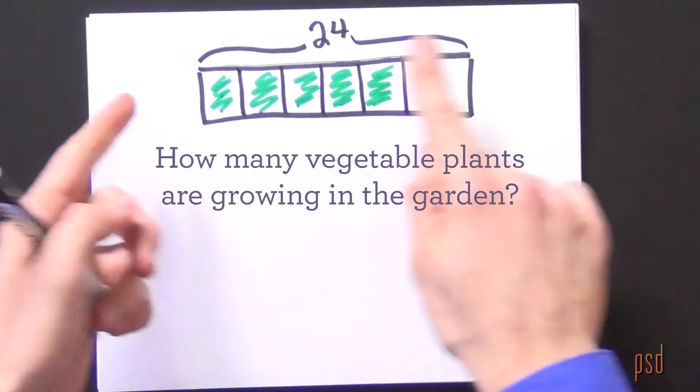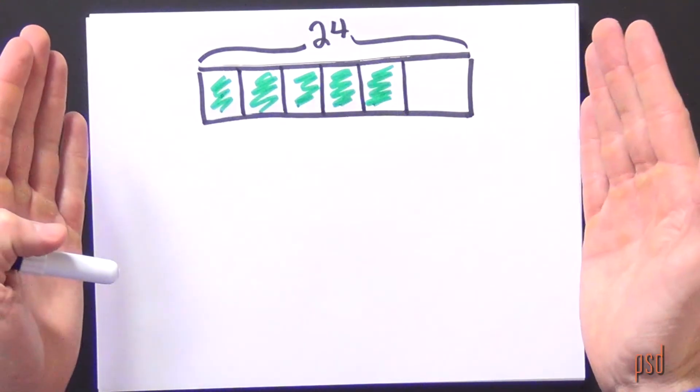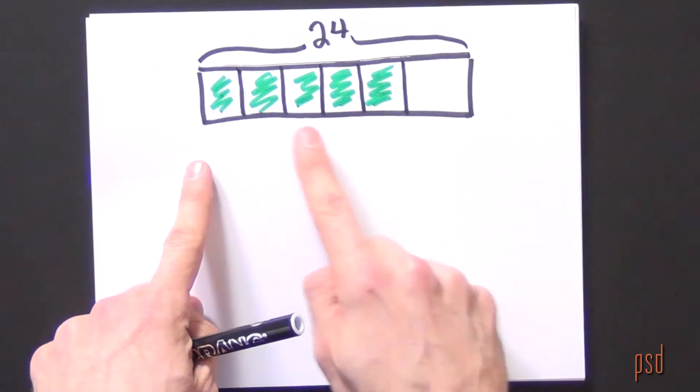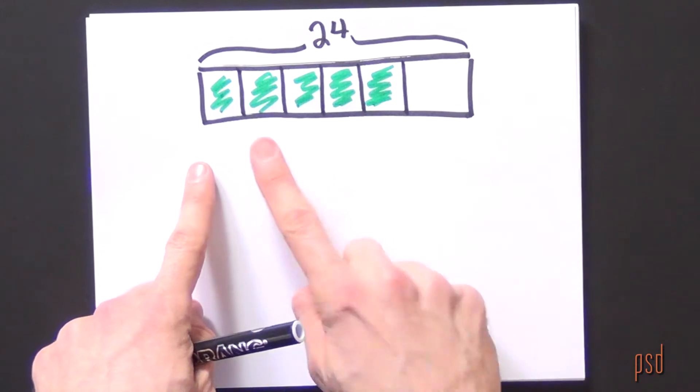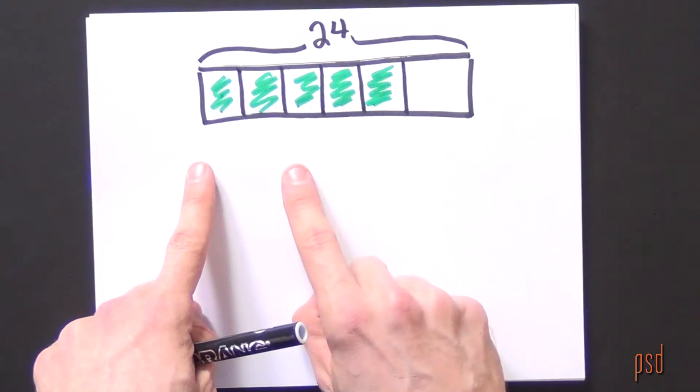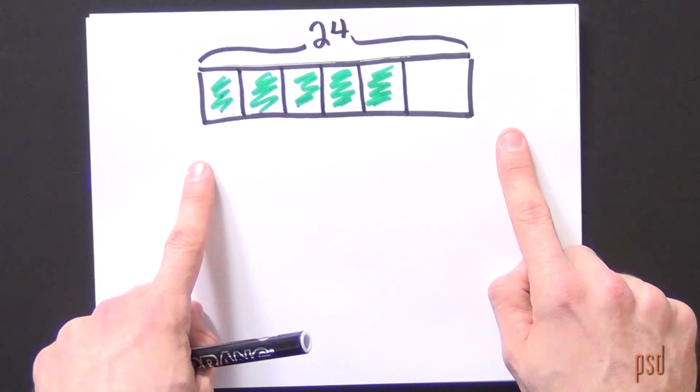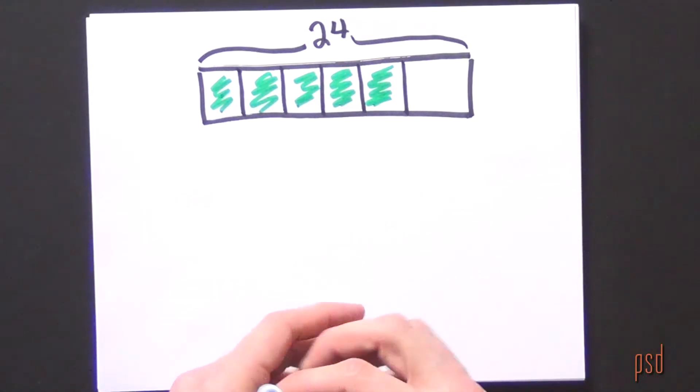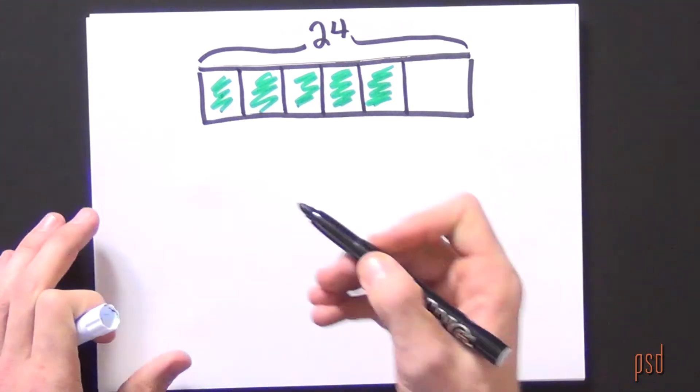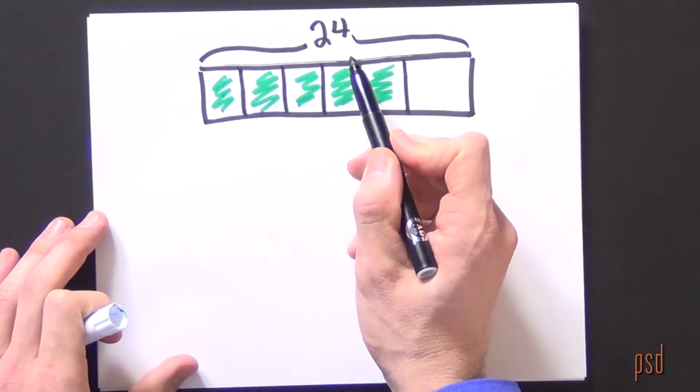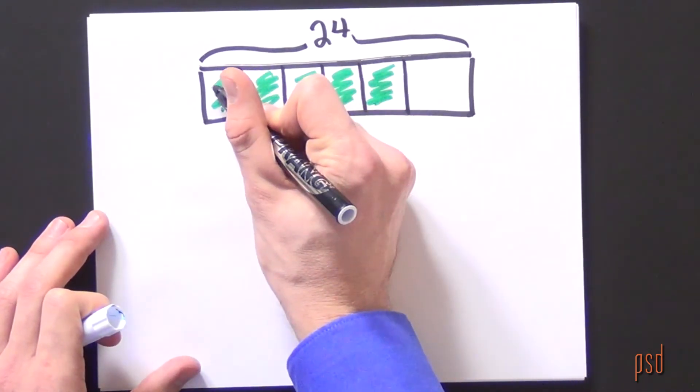This means that students need to understand the whole garden has 24 and it was broken into six parts. So how many plants must there be in each of those parts? I know the whole is 24 and I've broken it into six parts. This means that I can take 24 divided by 6, which is 4.